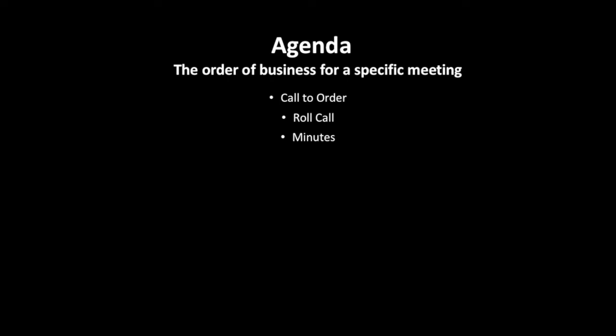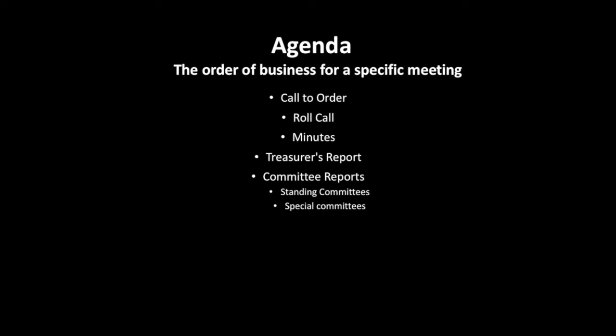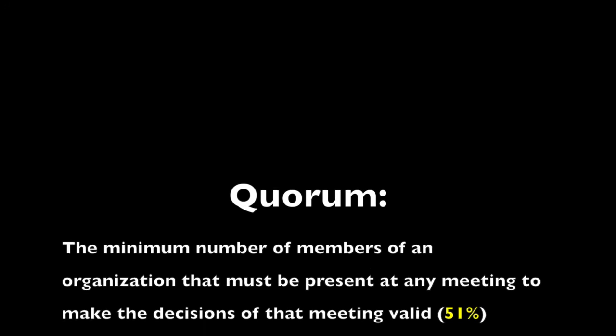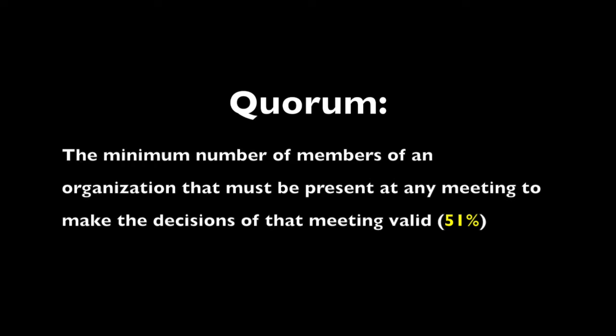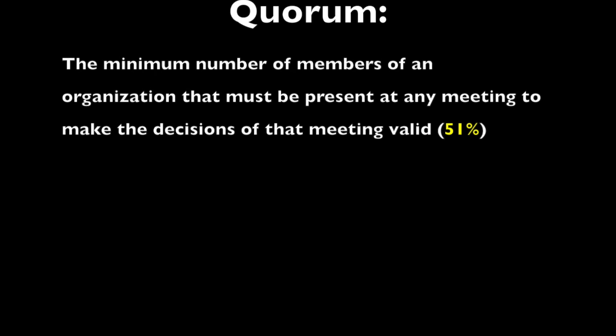The agenda should include the following: Call to Order, Roll Call, Minutes, Treasurer's Report, Committee Reports including Standing Committees and Special Committees, Unfinished Business, New Business, and Adjournment. Call to Order is done by the President to bring the meeting to order. Roll Calls are used to determine quorum, which should be at least 51% of members present, and majorities by those attending the meetings.